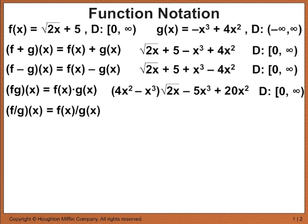f over g of x is the same as f of x over g of x. Writing f of x over g of x gives you root 2x plus 5 over negative x cubed plus 4x squared. The domain is where it gets a little bit tricky.